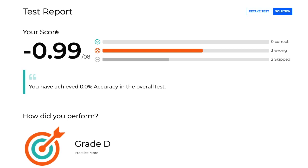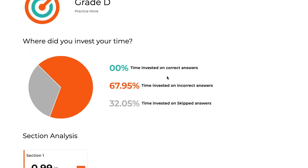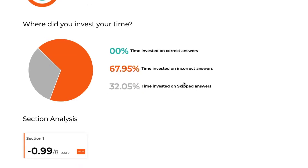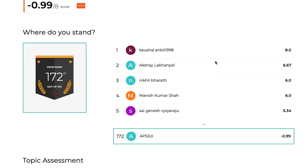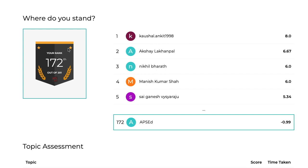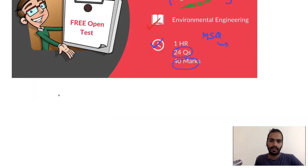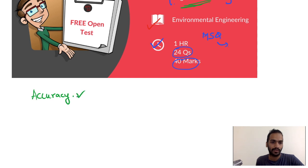Once you give the test, you will get a test report which you can analyze. The report will show your accuracy in the overall test, how much time you spent on correct answers, and how much time on incorrect answers. This will definitely help you improve your accuracy, and as accuracy improves, you can improve your GATE score. It will also give your rank out of all participants. Everyone — whether you have paid for courses or not — should attempt this open test and focus on improving your accuracy as much as possible.